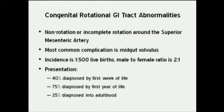Congenital rotational GI tract abnormalities occur due to incomplete rotation or non-rotation around the superior mesenteric artery. The most common complication is mid-gut volvulus. The large majority of patients are diagnosed in the first year of life; however, up to 25% may be diagnosed in adulthood.